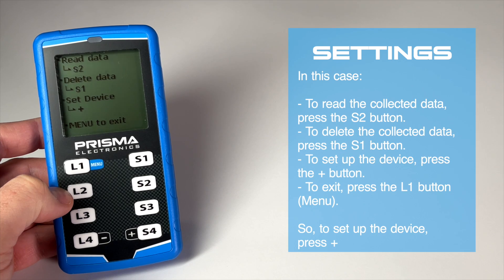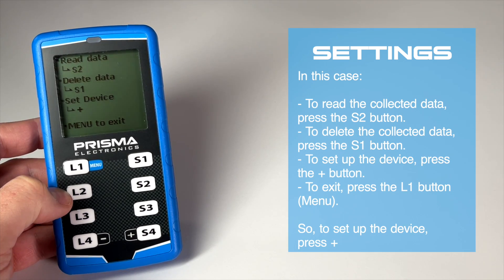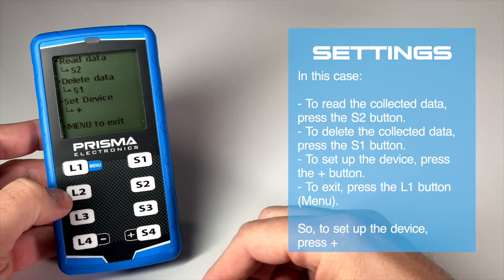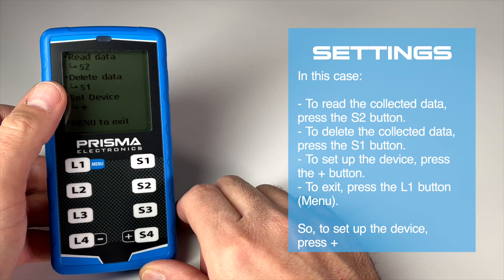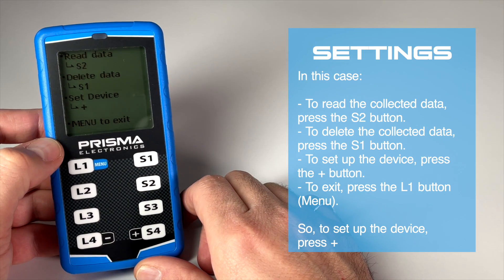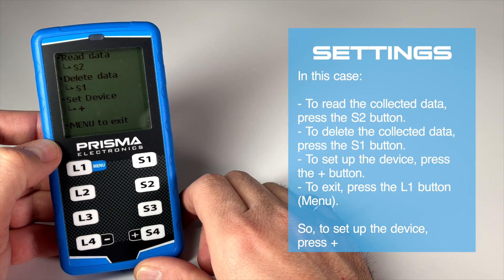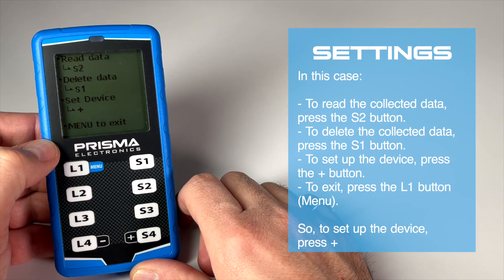In this case, to read the collected data, press the S2 button. To delete the collected data, press the S1 button.